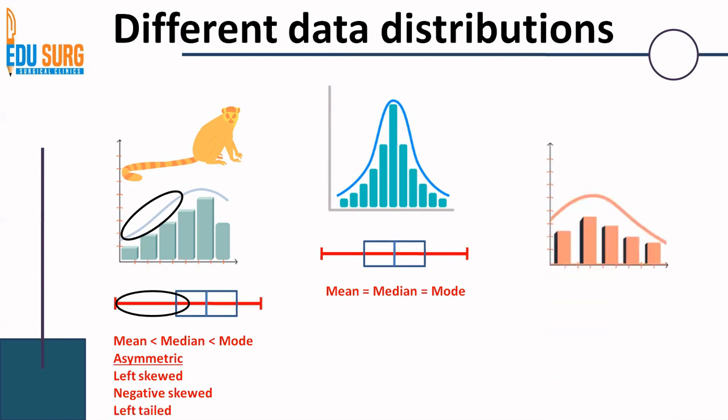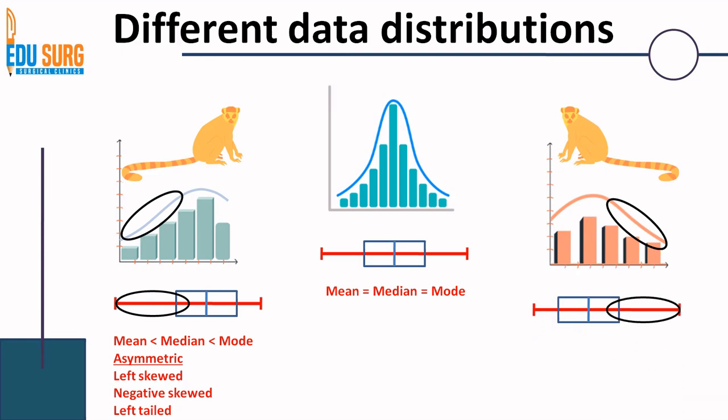Now going to the other side — a reverse graph of this, where the animal is looking the other way and the tail is towards the right. If you see the box plot of this, the right-sided tail is going to be longer.